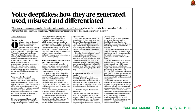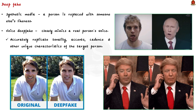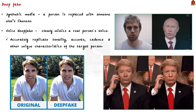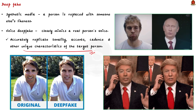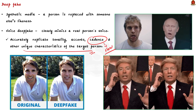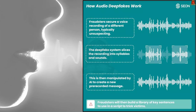This text and context article talks about voice deepfakes. We will go through what is voice cloning, how they are generated, used, misused and differentiated. Voice deepfakes closely mimic a real person's voice, accurately replicating tonality, accents, cadence and other unique characteristics. They are created using AI and large computing power. The first step is to feed training data — the original recordings of the target person's voice — to AI models. Using this training data, AI creates a synthetic voice that can then be made to say anything the creator wants.